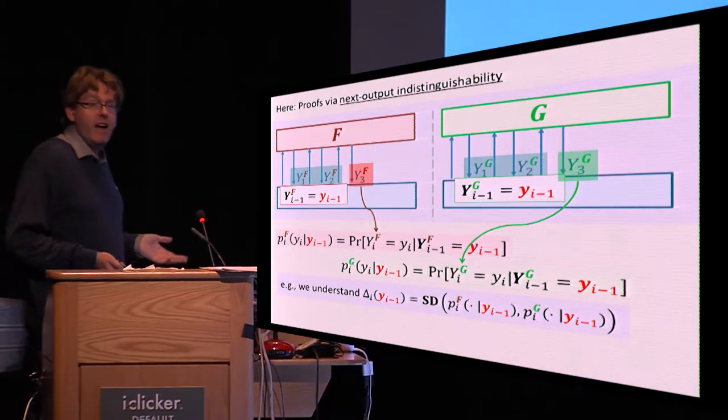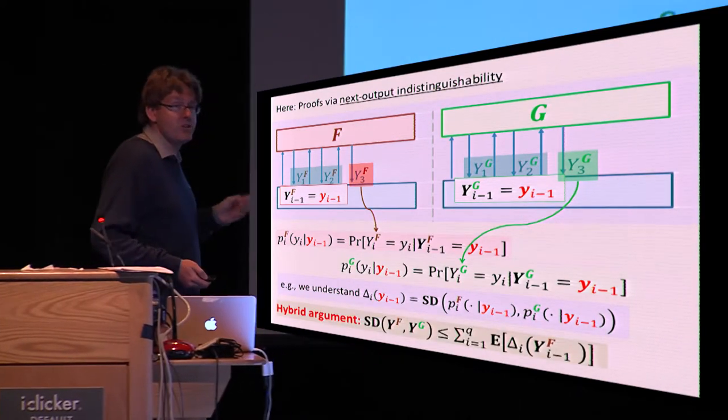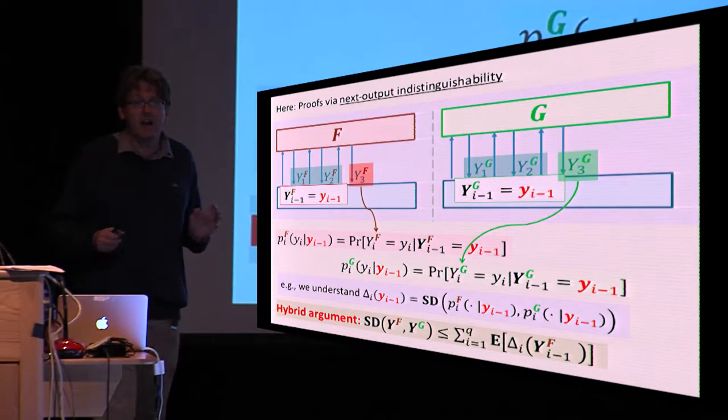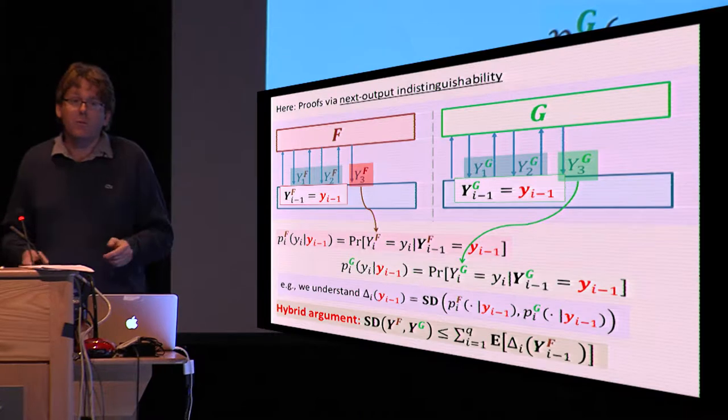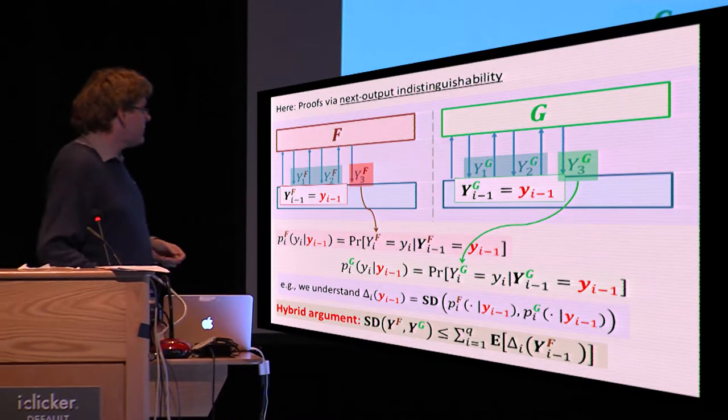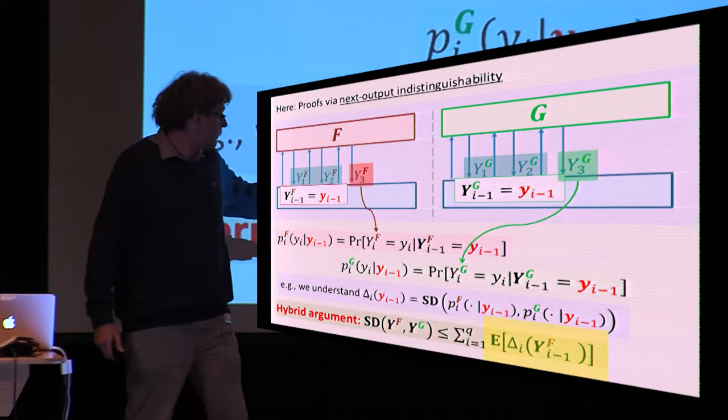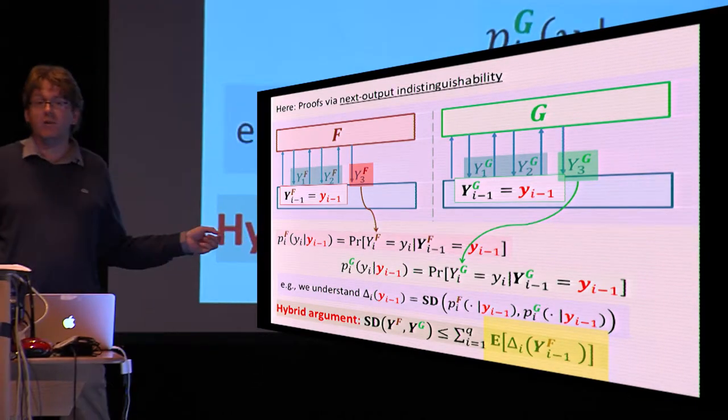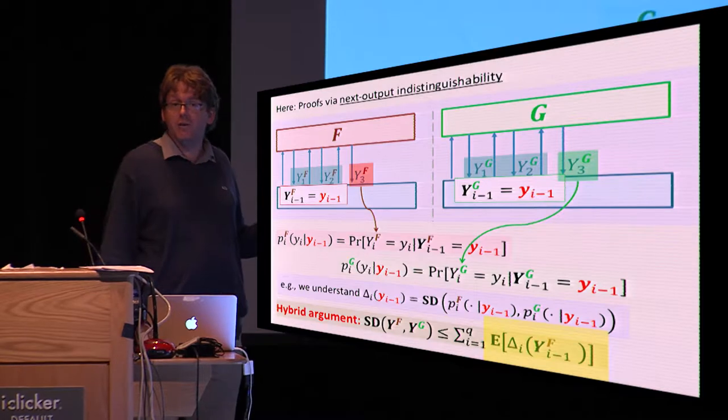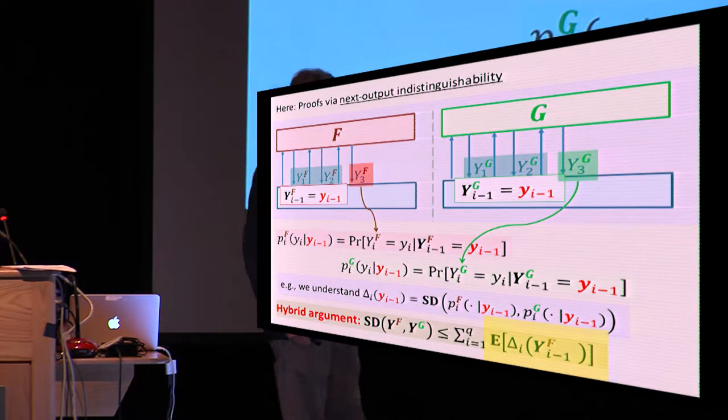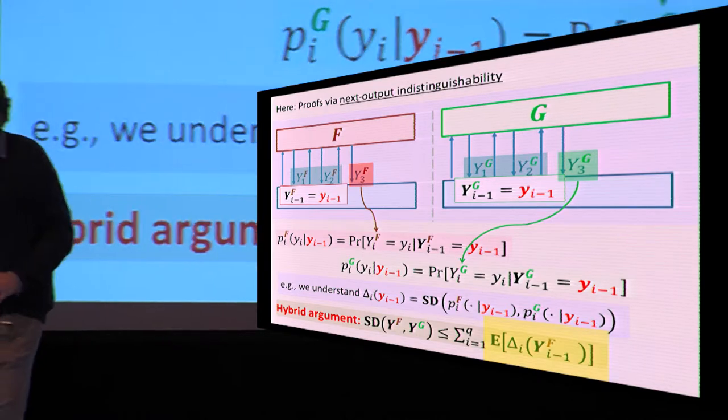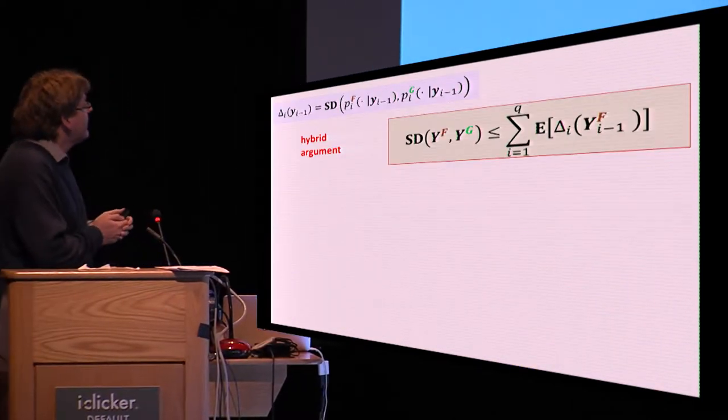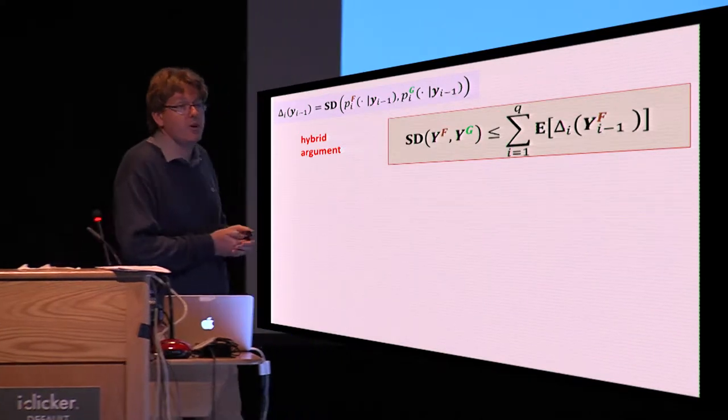By comparing, typically we will try to understand and upper bound the statistical distance between these next output distributions. If you can do that, then every cryptographer will probably almost instantaneously try to apply a hybrid argument to upper bound overall statistical distance by summing up these next output statistical distances. This is more of a probabilistic version of how you will state a hybrid argument. You have to be careful. These next output distances depend on the sequence of previous outputs, so they are random variables, and therefore you will need to take an expectation here when you're summing up. But it's really the usual hybrid argument.